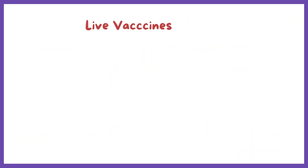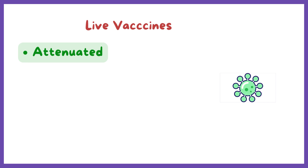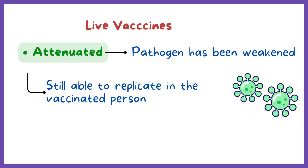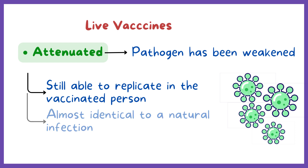Live vaccines are attenuated, meaning that the pathogen has been weakened in the laboratory to make it less pathogenic, but still able to replicate in the vaccinated person so that it can stimulate an immune response. In fact, the immune response to a live attenuated vaccine is almost identical to what happens in a natural infection.